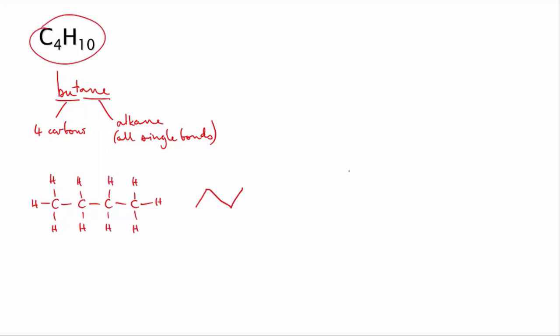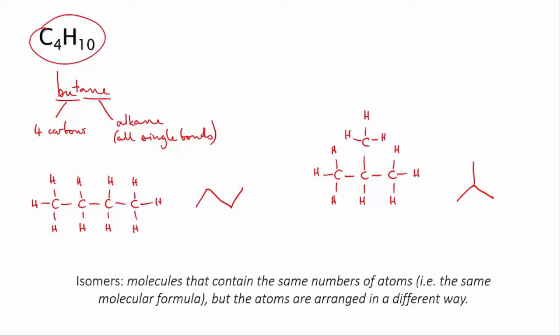However, there's another way of arranging four carbons and ten hydrogens. In this molecule the formula is exactly the same—the same number and type of atoms—but the structure is different. It's T-shaped rather than a straight chain. So these two molecules are called isomers. They have the same number and type of atoms, but the atoms are bonded to give different structures.